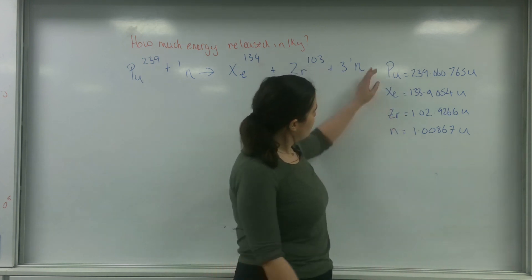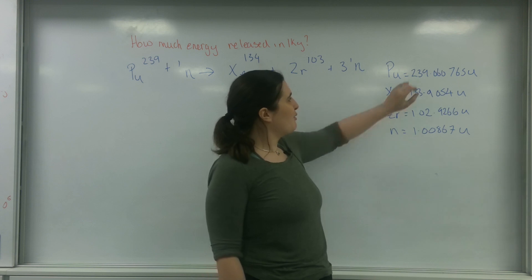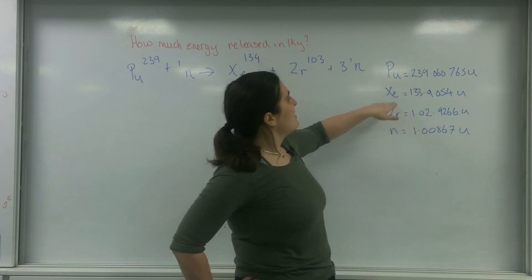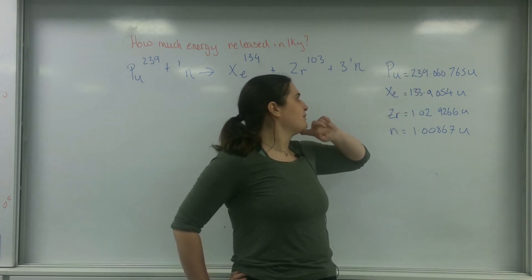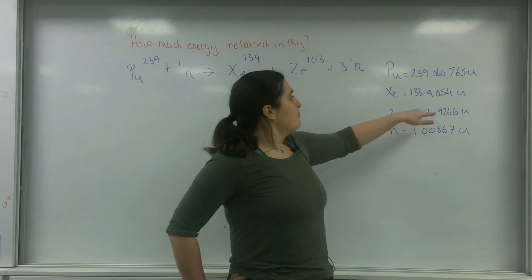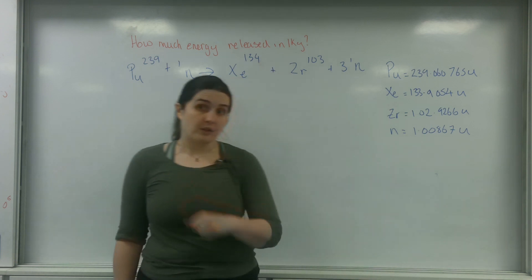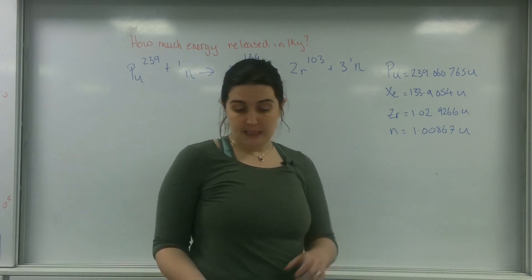I've been given information: polonium has 239.06765 atomic units, xenon is 133.9054U, zirconium is 102.9266U, and a neutron which you find at the front of your data sheet is 1.00867.